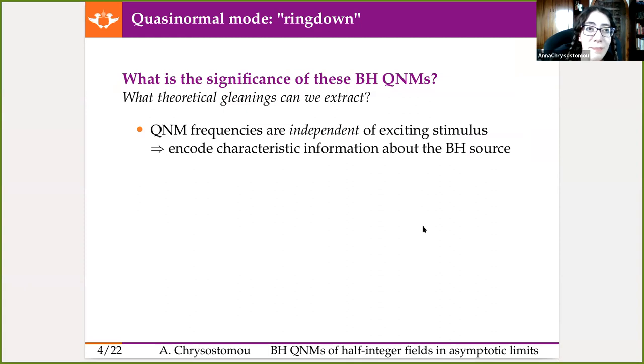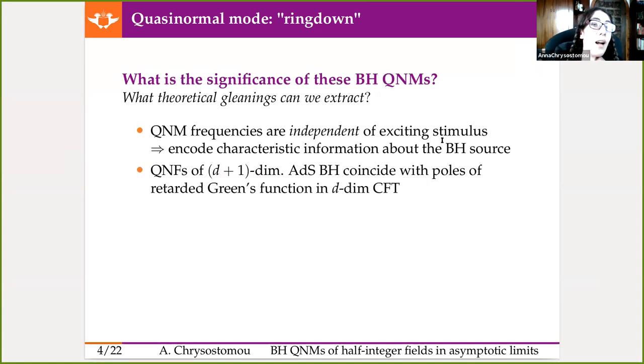The first, for those more astronomically inclined, is that the quasi-normal frequency is independent of the initial perturbation. In other words, whatever event happened to cause the perturbation does not affect the final outcome. It turns out that the final outcome is actually completely dependent on the characteristic information about the black hole source. So we can extract the black hole mass, angular momentum, and charge of a black hole from this quasi-normal frequency, which the No-hair theorem states suffices to describe the black hole perfectly. I won't go into details on the second point, but I bring it up to demonstrate that quasi-normal frequencies can be taken beyond their face value and used to explore more abstract kind of concepts.